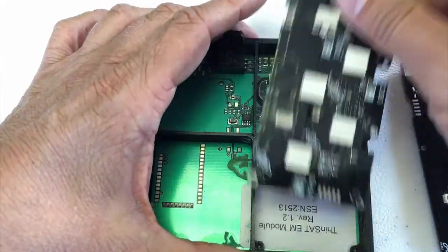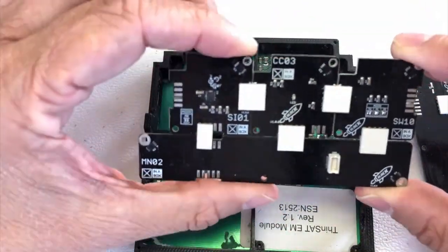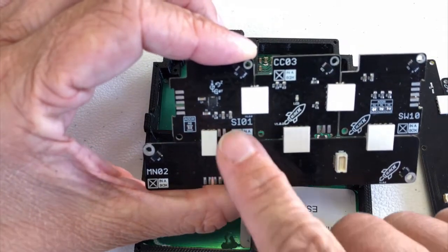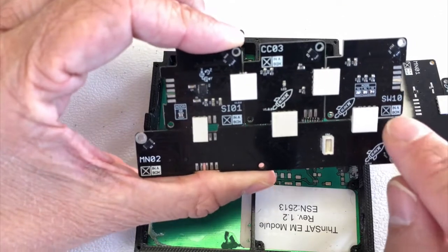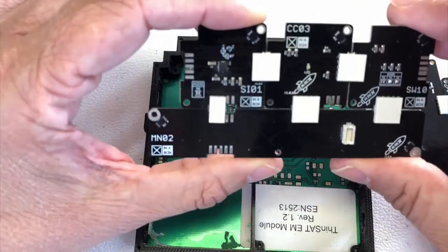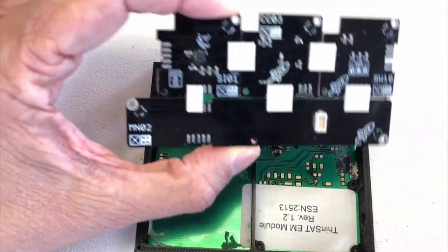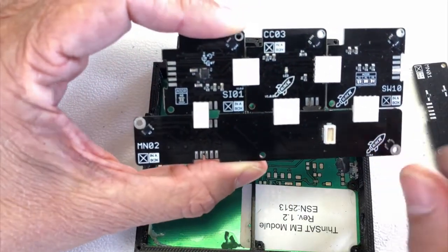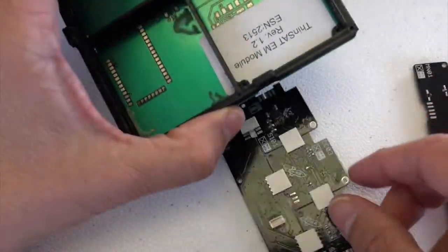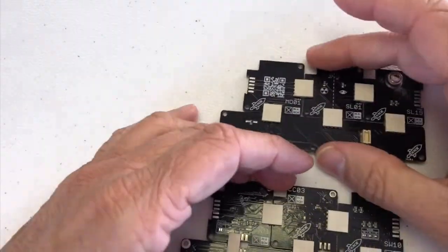And then we have the bottom layer sitting here. Here we have the SI01, the CC03 which is the MCU, and the SW10. And that sits on a MN02. It's different from the MN01 only because there's a temperature sensor in the corner. Let me put the satellite aside for a second.